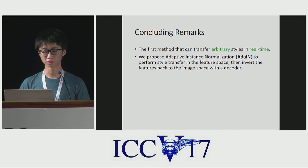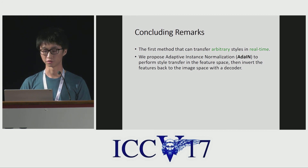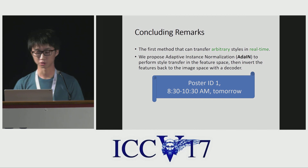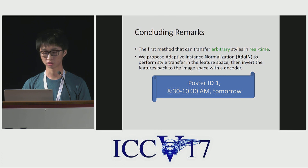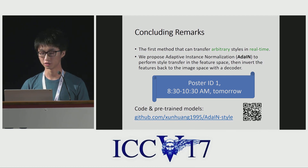In summary, we propose the first algorithm that can transfer arbitrary styles in real-time. We use an AdaIN layer to perform style transfer in the feature space, then invert the features back to the image with a decoder. I will present our poster tomorrow morning from 8:30 to 10:30; the poster ID is 1. Please drop by if you have any questions or want to know more details. We have also released the code and pre-trained models on GitHub — we welcome everyone to try our model with their favorite images.